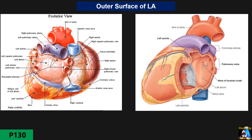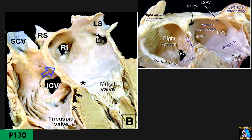You can see that the intra-atrial septum is located in the superior-anterior-posterior region. There are two pulmonary veins on each side — superior and inferior, from both right and left sides — and they are very close to each other. The entrance of those veins into the left atrium is only the thickness of the vein walls.